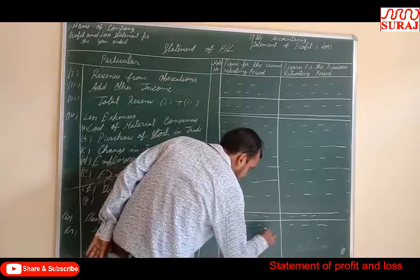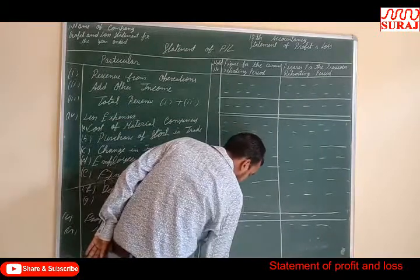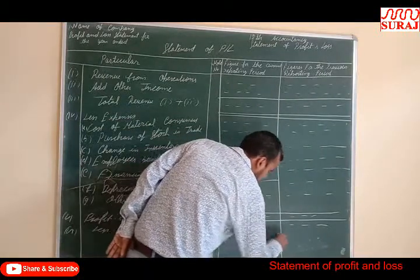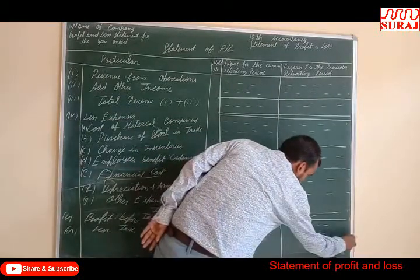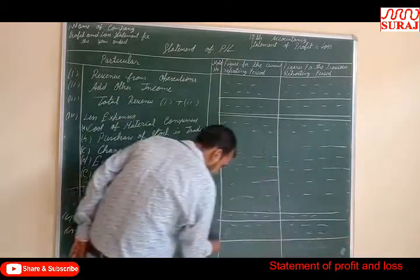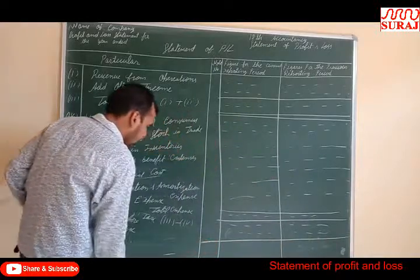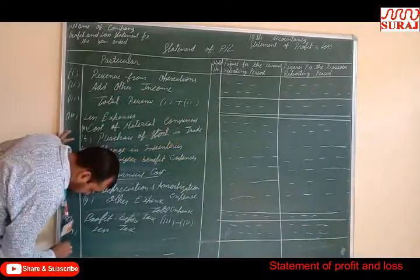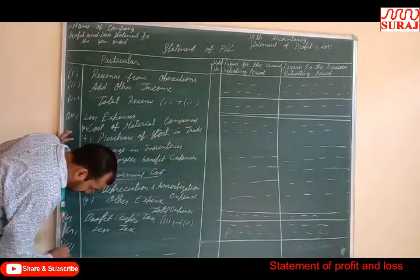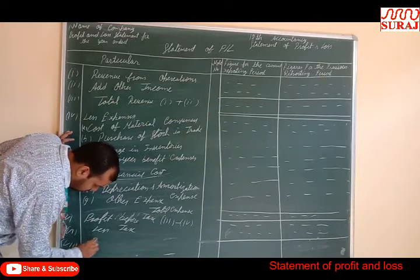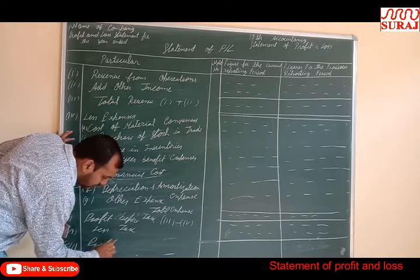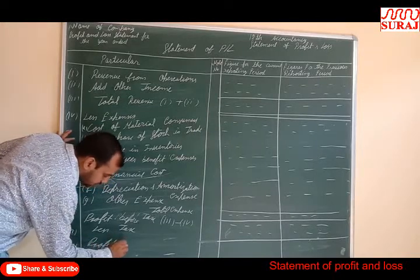You then minus the tax. So number 7 is Profit After Tax.